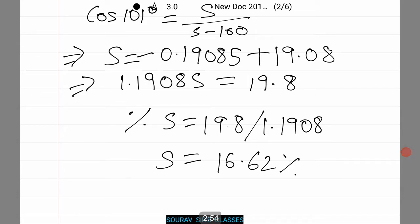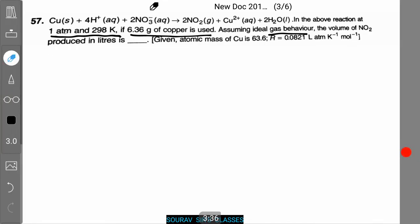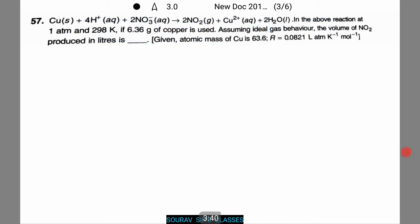Moving on to the next question. Here we are given the equation: copper (solid) plus four hydrogen ions plus two nitrate molecules gives two NO2 plus two copper cations plus two H2O (liquid). At one atmospheric pressure and 298 Kelvin, if 6.36 g of copper is used and ideal gas behavior is assumed, the volume of NO2 produced in liters is to be calculated. The atomic mass of copper and R in liters·atm per Kelvin per mol are also given.